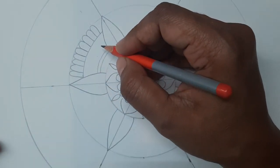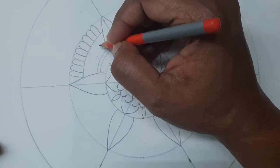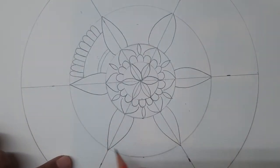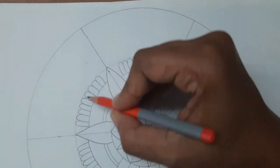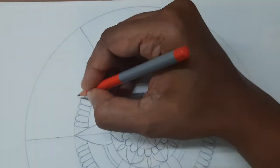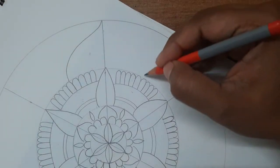So this is how we are going to fill in the pattern between any two petals in this circle. Now the next pattern: take any two grids and draw a curved petal like this.